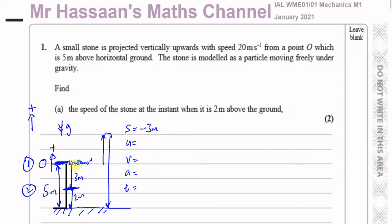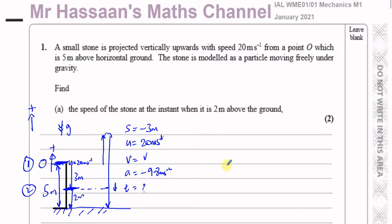U is the initial velocity, positive 20 meters per second upwards. V is the final velocity at 2 meters above the ground — it will be negative since the stone is on its way down. A is the acceleration due to gravity, negative 9.8 meters per second squared (taking up as positive). We don't need to find the time for this part, so we have S, U, V, and A.